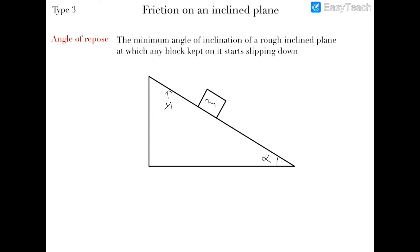In this video I'm starting Type 3 problems, which are problems in which friction acts on the inclined plane. To start, we cover the first topic: angle of repose. The definition is the minimum angle of inclination of a rough inclined plane at which a block kept on it will start slipping. Equivalently, it is the maximum possible angle of inclination for which a block placed on the inclined plane will not slide down.